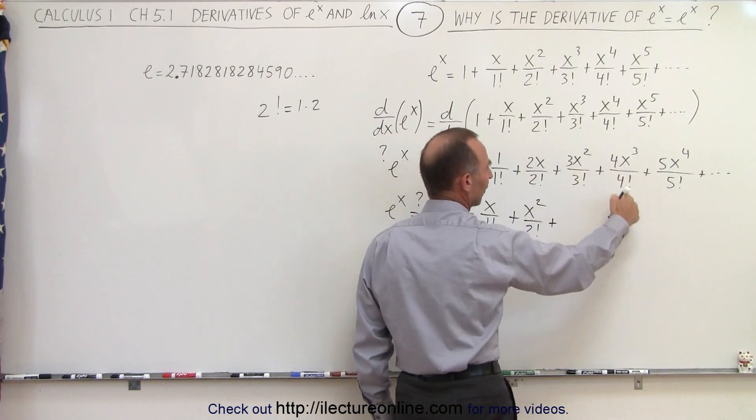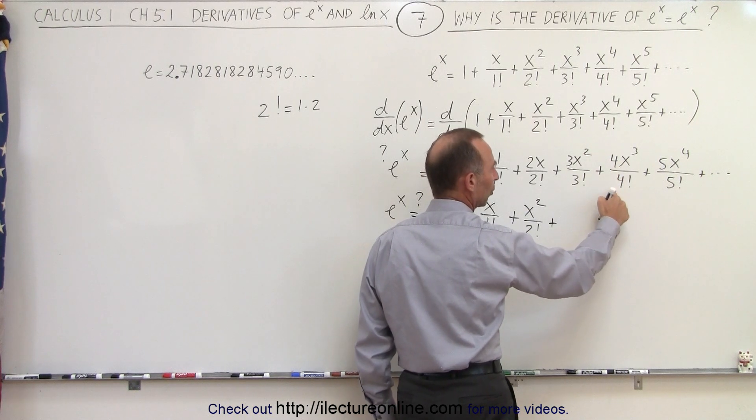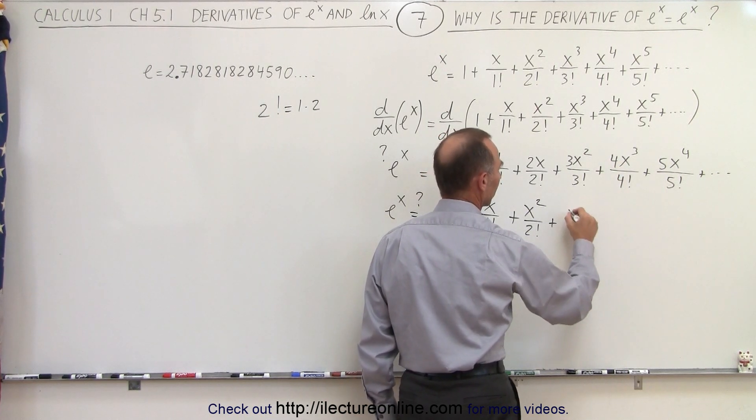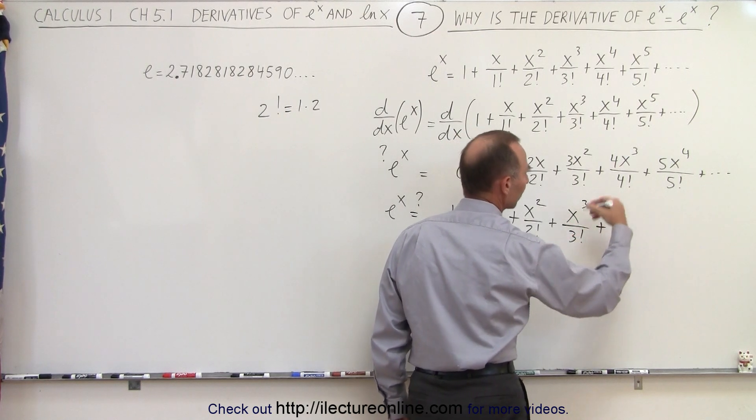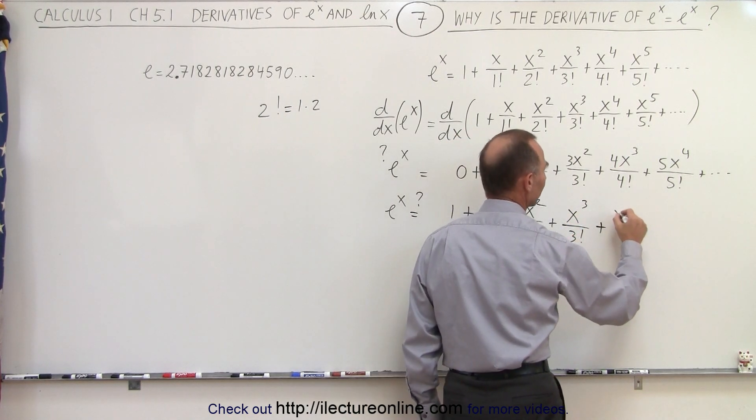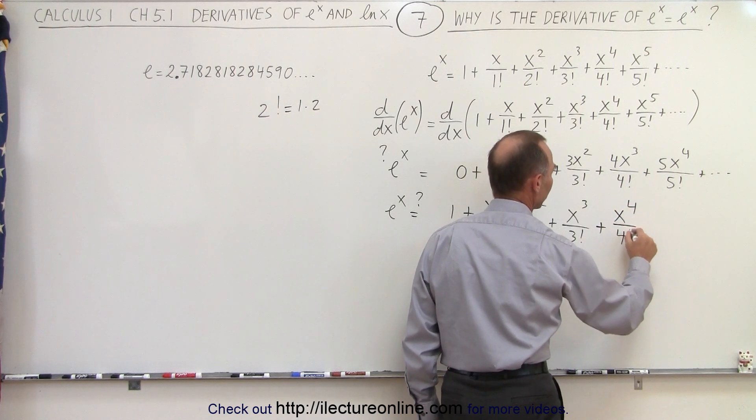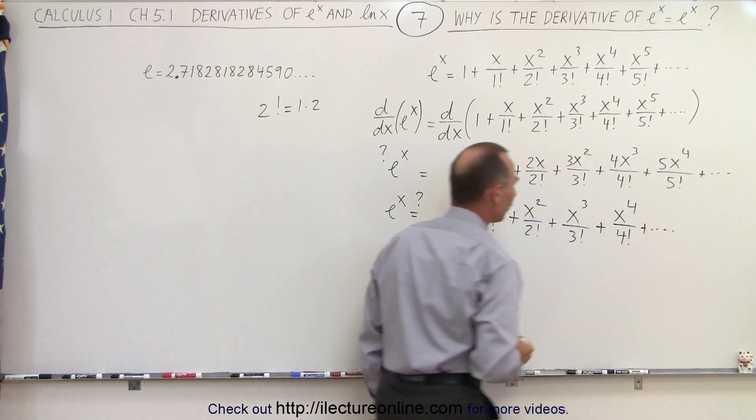And here we divide both numerator and denominator by 4, which leaves us with 3 factorial in the denominator, x cubed divided by 3 factorial, plus... and again, now you're beginning to see the pattern, this will be x to the 4 divided by 4 factorial, and so forth, and then you realize...